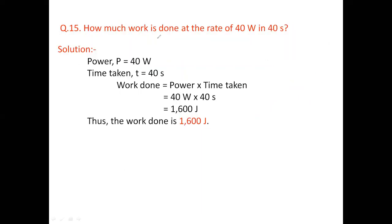Question number 15: How much work is done at the rate of 40 watt in 40 seconds? Here we have to calculate the work done. Let us see solution here. Power P is equal to 40 watt. Time taken is 40 seconds.